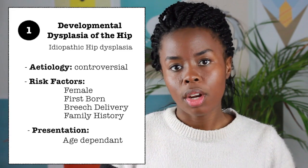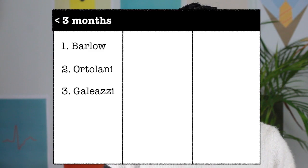Presentations depend on the patient's age. Children below the age of 3 months usually present with a positive Barlow-Ortolani test as well as a Galeazzi test. Remember, B is close to D, so in a Barlow's test you try to dislocate the hip. O is close to R, so in an Ortolani test you try to relocate the hip. In a Galeazzi test, you'll find that the patient has a shortened limb.